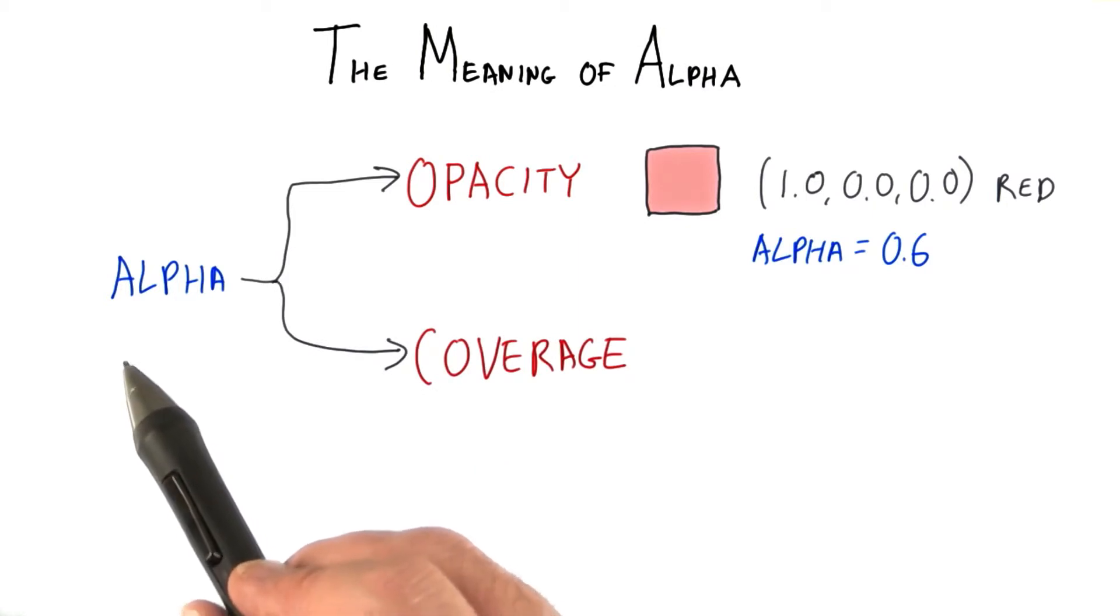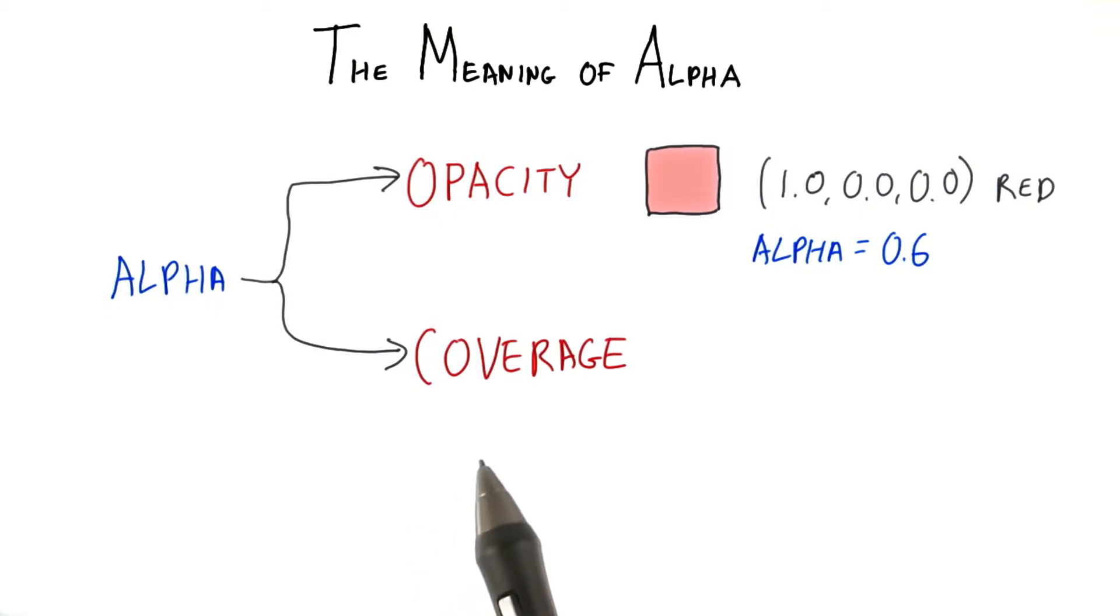When used for texturing, we often think of the alpha as the amount of coverage. For example, to create a cutout leaf, you could specify for each texel whether the leaf is visible or not, an alpha of 1 or 0.